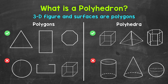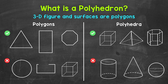We will start with what a polyhedron is. Polyhedra is the plural form of polyhedron. Then we will move to faces, edges, and vertices. Then we will take a look at nets. And then lastly, we will talk about Euler's formula for polyhedra.